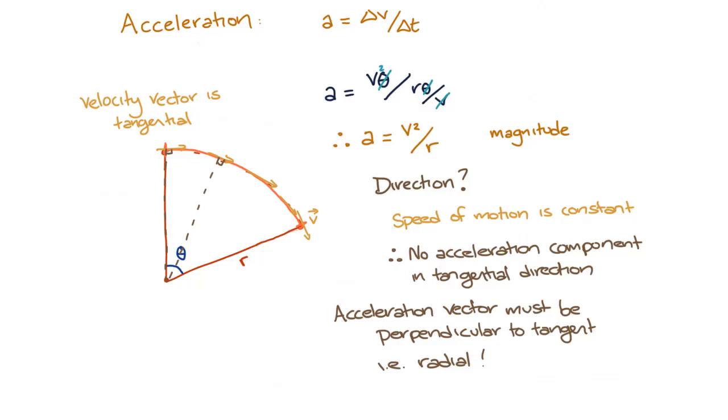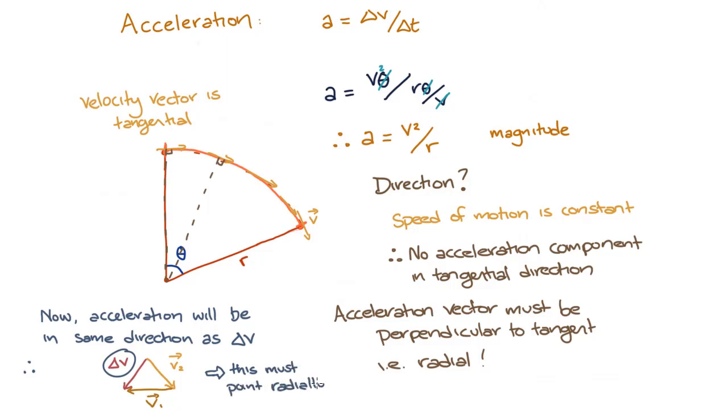The final bit we need to do is to figure out whether this acceleration is pointing radially inwards or radially outwards. Now, we know that the acceleration must be in the same direction as delta v, our change in velocity. So if we draw out our triangle with v1, v2, and delta v, it's clear that delta v is pointing in towards the center of the circle and not away from the center of the circle. This means that the acceleration must point radially inwards.